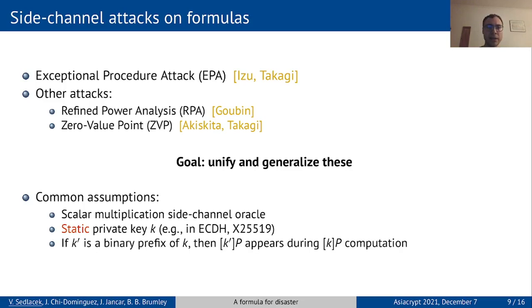And finally, the scalar multiplication algorithm must have the property that if k' is a prefix of the secret key k, then k' times P is computed in the course of computing k times P.